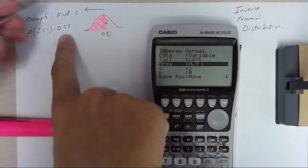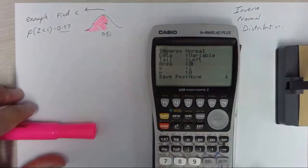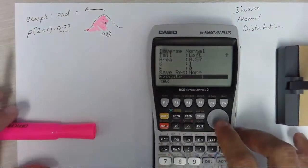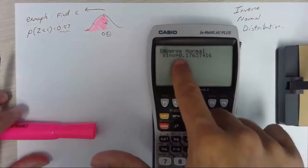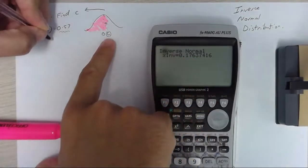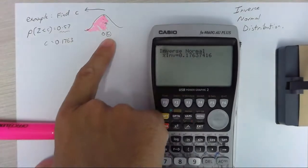The area, the area under the curve is this value here so 0.57 and it's a standard normal so it's 1 0 and I can calculate that and it says that c is 0.1763.